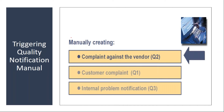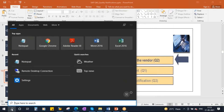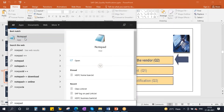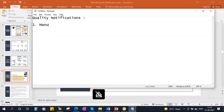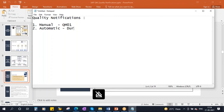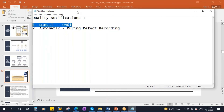Quality notifications can be created manually or automatically — both are possible. Notifications can be created manually using transaction QM01, or automatically during defect recording. We will cover both; first, we will start with the manual creation.